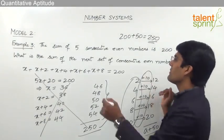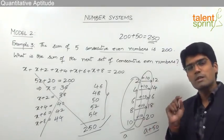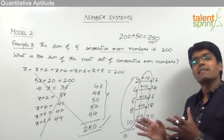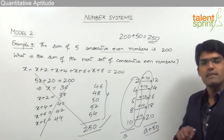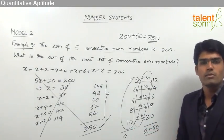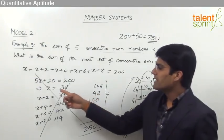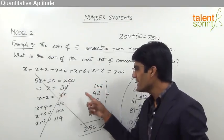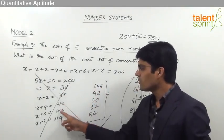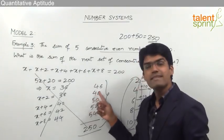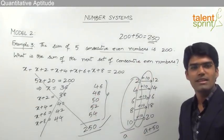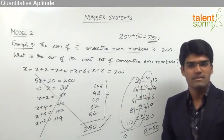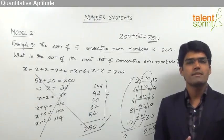This same rule applies to consecutive odd numbers as well. When we take 5 consecutive odd numbers and then the next 5 consecutive odd numbers, the difference between each corresponding pair is also 10. So the total increases by 50 in that case too. This is how you can answer such questions in a smart way.